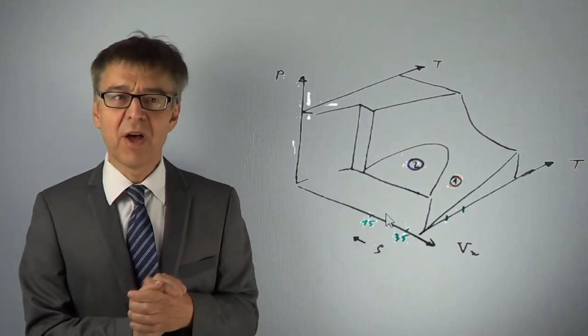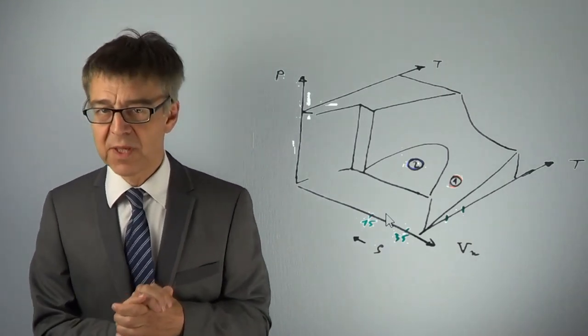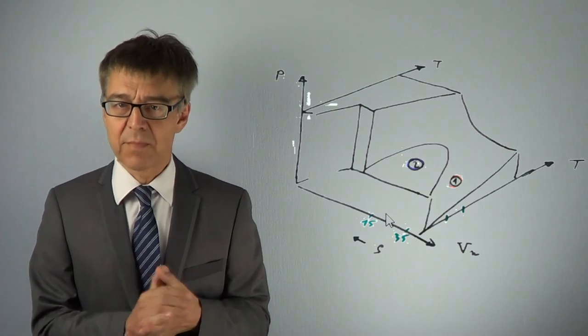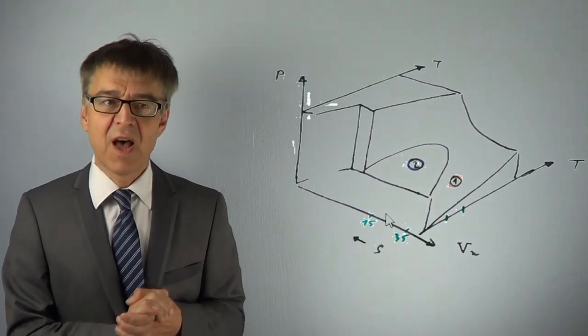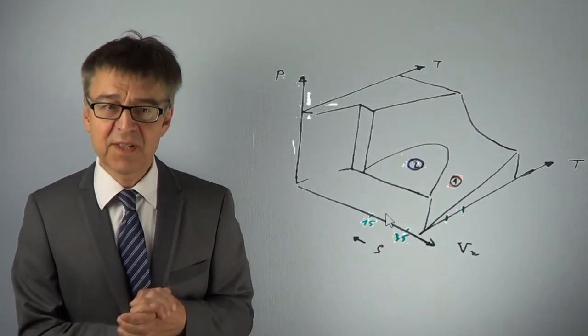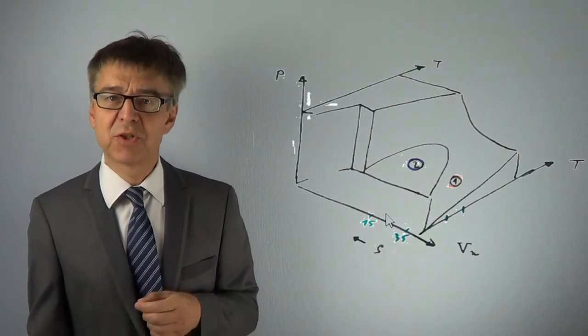The isothermal and isobaric slopes of the PVT surface, the partial derivatives, are associated with the compressibility and the thermal expansion coefficient.